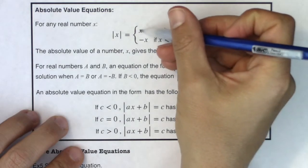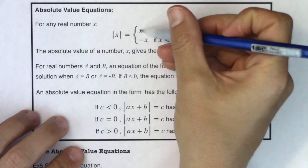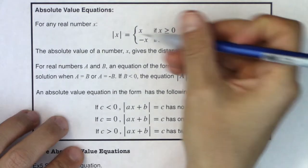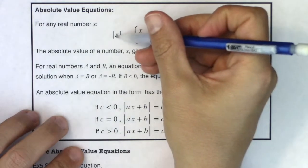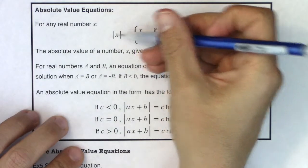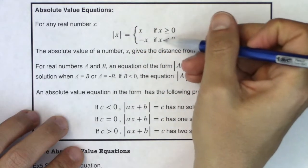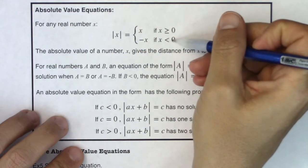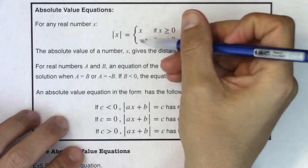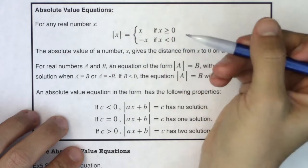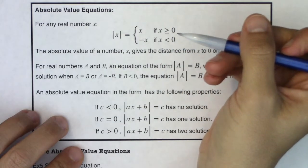So if x is positive, just return x. But if the number inside is negative — meaning it's less than zero — then give me the opposite sign of that number.